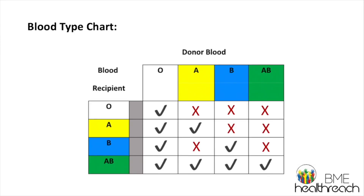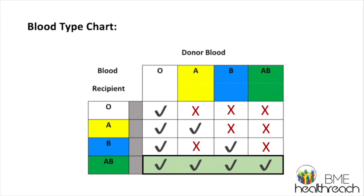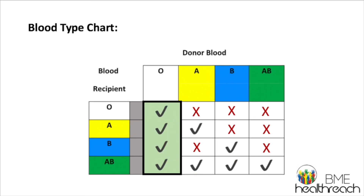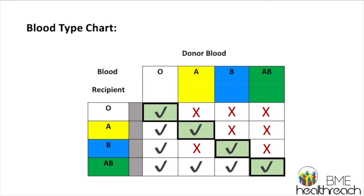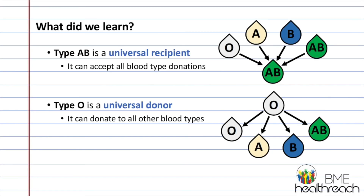Putting all of our blood recipient charts together, we get the complete blood type chart. Notice that blood recipient type AB was always able to accept donor blood of any type. Notice how donor blood type O was able to donate to any blood recipient type. Notice that every donor blood was able to give to blood recipients of the same type. To summarize: we learned that type AB is the universal recipient, meaning it can accept all blood type donations, and type O is the universal donor, meaning it can donate to all other blood types.